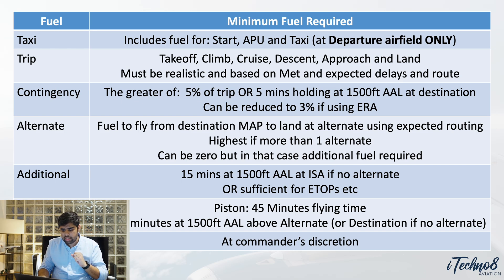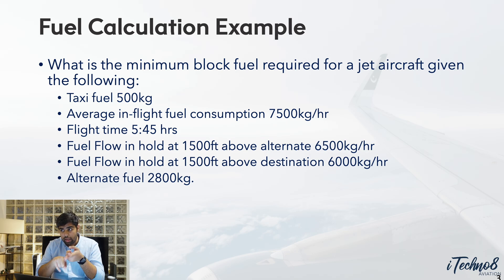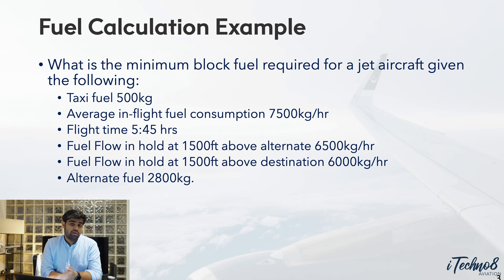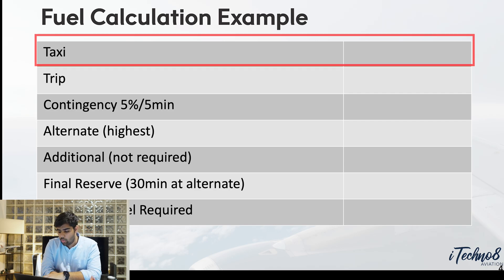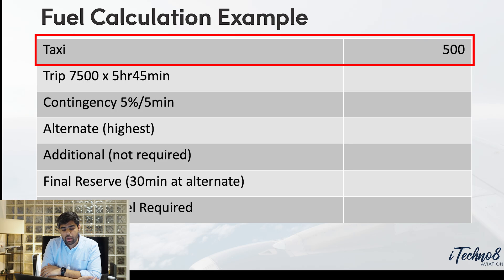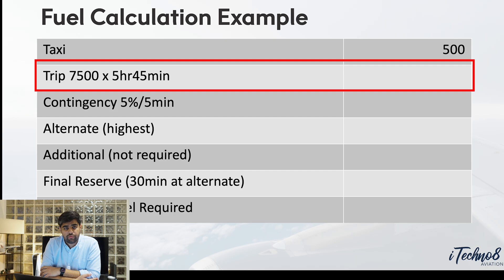Now we'll do one question together to see how this ties together. For example: what is the minimum block fuel required for a jet aircraft given the following? With block fuel you need taxi fuel included; if they asked for take-off fuel you would subtract taxi fuel since you're not taking off with it. Taxi fuel is 500 kg as stated in the question. For trip fuel, the burn rate is 7,500 kg/hour and the flight time to destination is 5 hours 45 minutes, giving 43,125 kg.